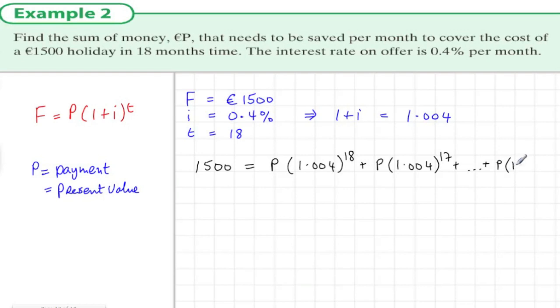This here is a geometric series. We will label these terms 18 and 17 down to term one. The first term a is 1.004 times P, n is 18 terms, and the ratio is 1.004, so we'll write down the formula for the sum of a geometric series.